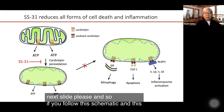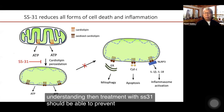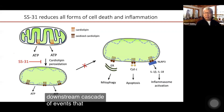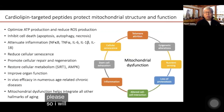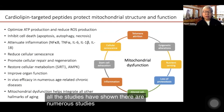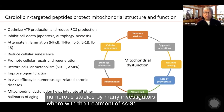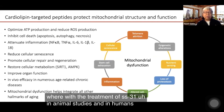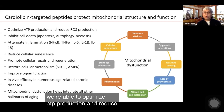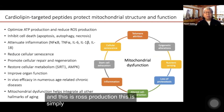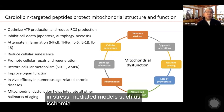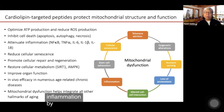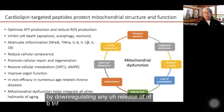Following this understanding, treatment with SS31 should be able to prevent the downstream cascade of events that can lead to aging as well as age-related pathologies. Numerous studies by many investigators, in animal studies and in humans, have shown that SS31 optimizes ATP production and reduces ROS production by promoting electron transfer. SS31 has been shown to inhibit all types of cell death in stress-mediated models such as ischemia, and to attenuate inflammation by down-regulating NF-κB, TNF-alpha, and the interleukins.